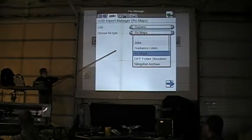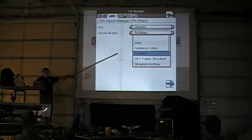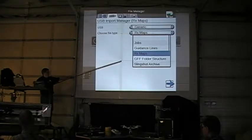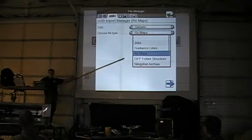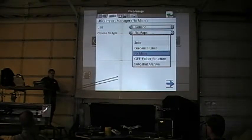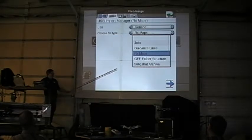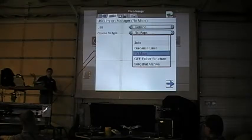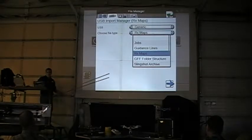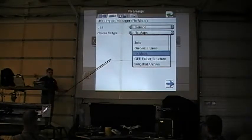As far as what we can bring in: we can bring in jobs (JPL files), guidance lines, RX maps, and grower-farm-field folder structure. If you've got an established grower-farm-field structure done in Farmworks, SMS, Green Star, or a different controller, you can bring that data in. The Slingshot archive lets you take your files and transfer them to the Slingshot website, which offers free cloud storage. You can bring those files back into the system, and if you have a Slingshot modem hooked up, you can download them off the cloud — so if you have multiple units in the field, you can download different jobs to different machines.